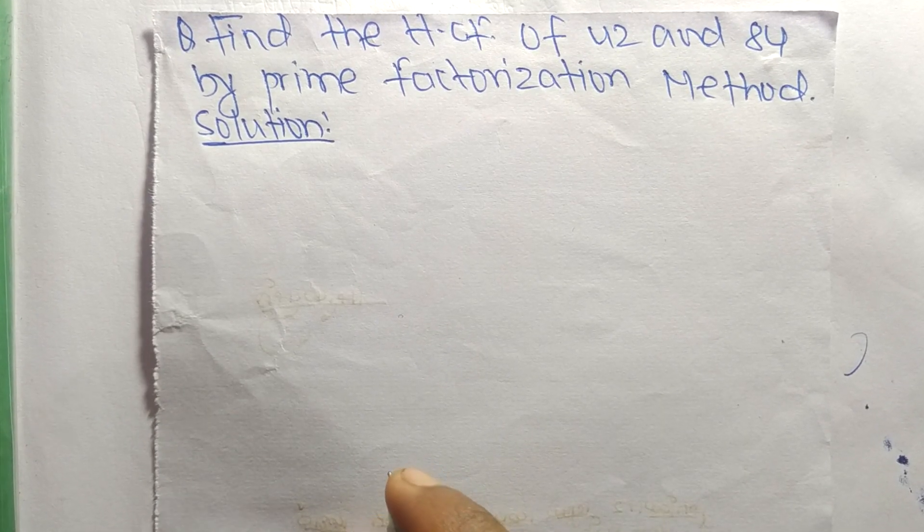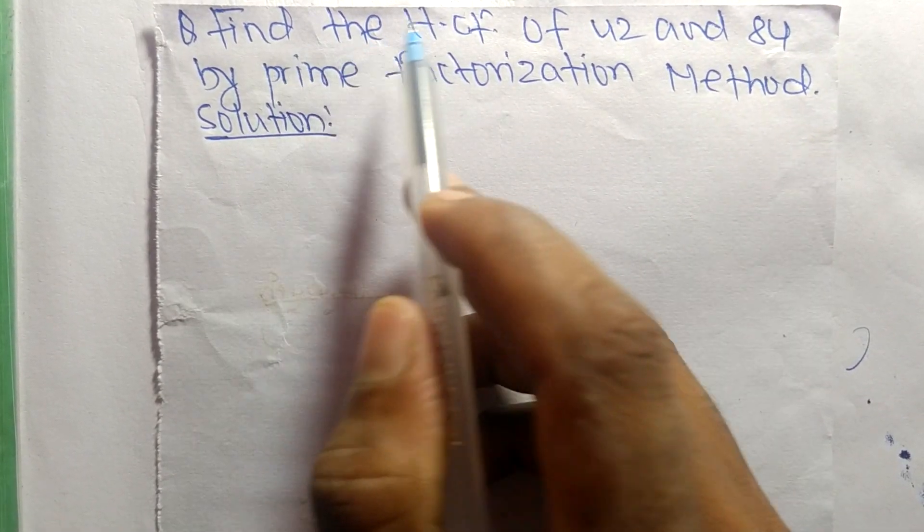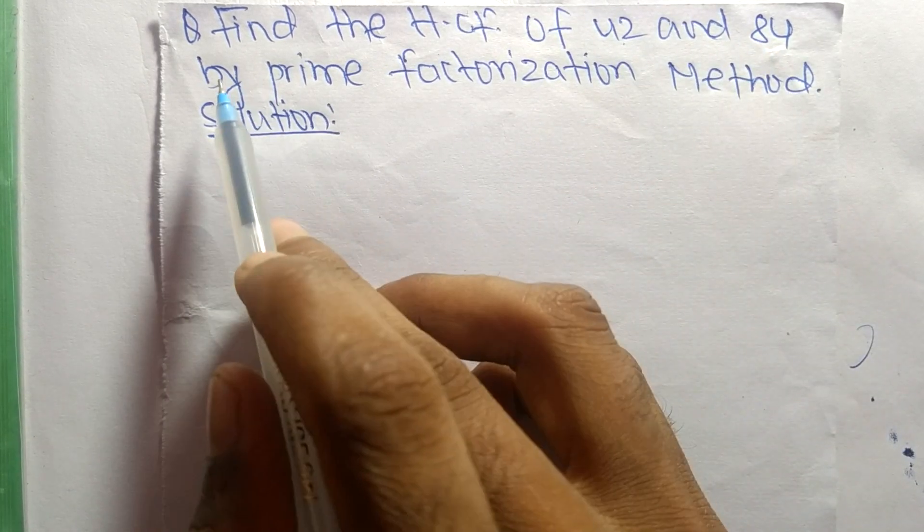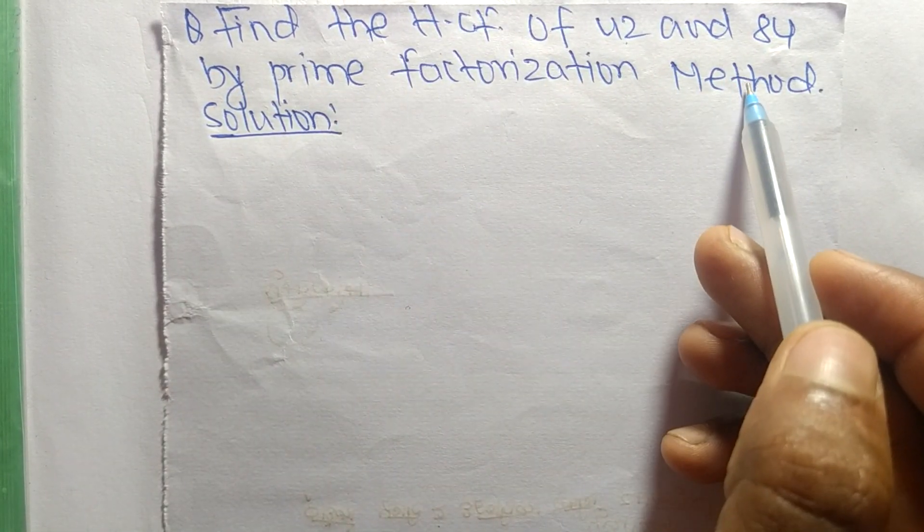So today in this video we shall learn to find the HCF of 42 and 84 by prime factorization method.